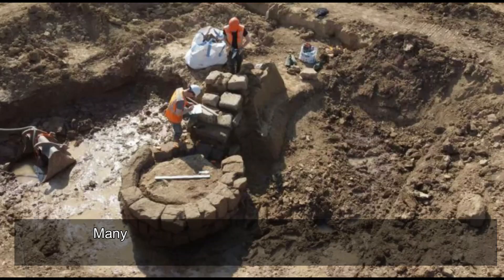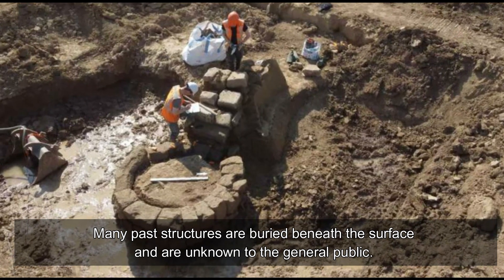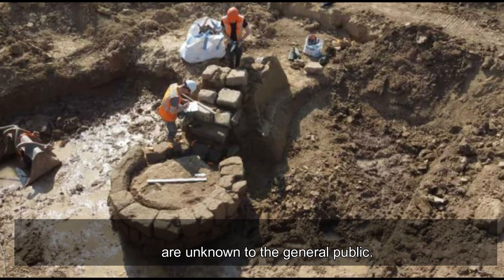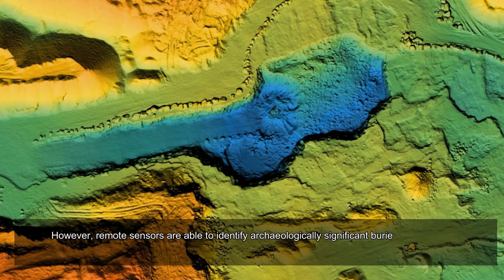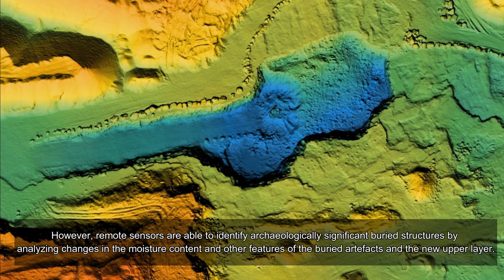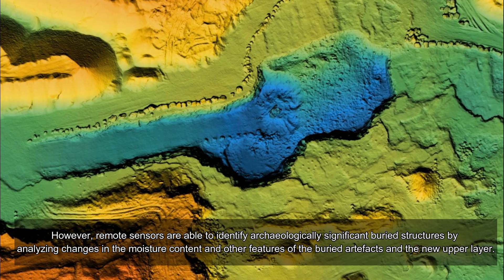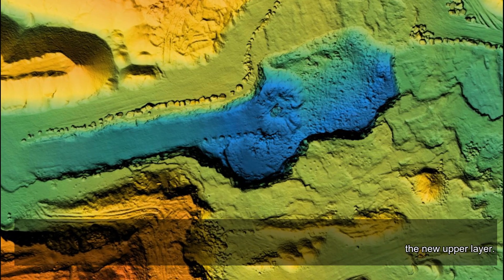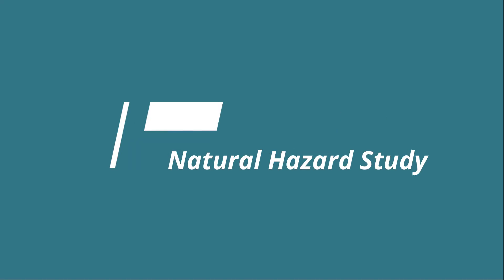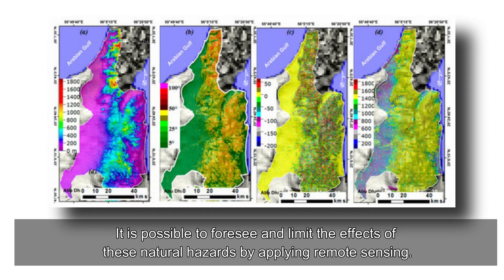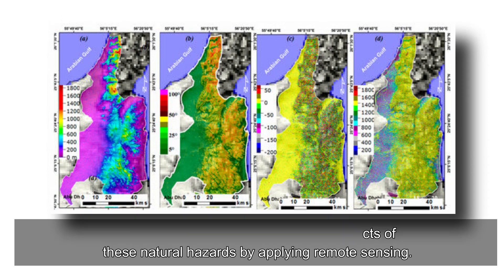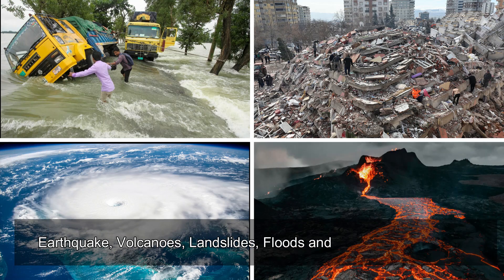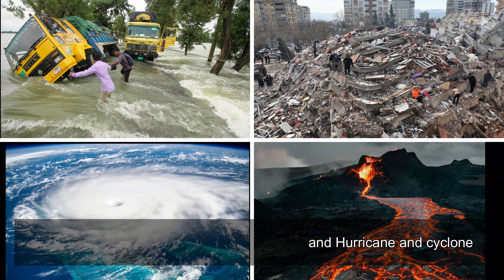Archaeological investigation: many past structures are buried beneath the surface and are unknown to the general public. However, remote sensors are able to identify archaeologically significant buried structures by analyzing changes in moisture content and other features of the buried artifacts and the upper layer. Natural hazard study: it is possible to foresee and limit the effects of natural hazards such as earthquakes, volcanoes, landslides, floods, hurricanes, and cyclones by applying remote sensing.